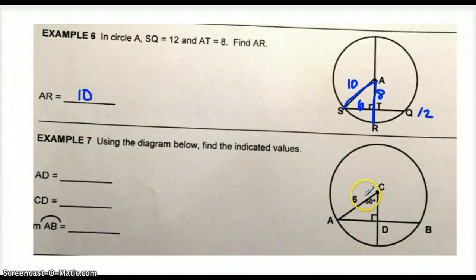For this diagram down here, we're told that a central angle measure is 60 degrees and the length of the radius is 6. We are asked to find the length of segment AD, the length of segment CD, and then the measure of arc AB. Using the knowledge of our special right triangles, we have the length of the hypotenuse, which is 6. So the short leg must be half of that at 3. And the long leg must be the short leg times the square root of 3. So that means that CD is 3 units long.